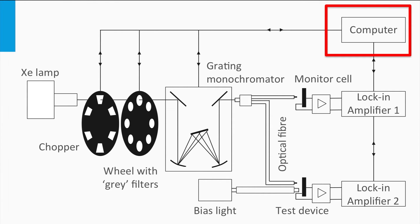If we perform this measurement under short circuit conditions, the short circuit current density can be determined from the spectral EQE. The advantage of measuring the short circuit current density using an EQE setup over JV measurements is that the current density measured by the EQE setup is independent of the spectral shape of the light source used. Secondly, on lab scale the real contact areas of solar cells are not accurately determined — the EQE measurement setup, when using shading masks, is independent of the contact area.